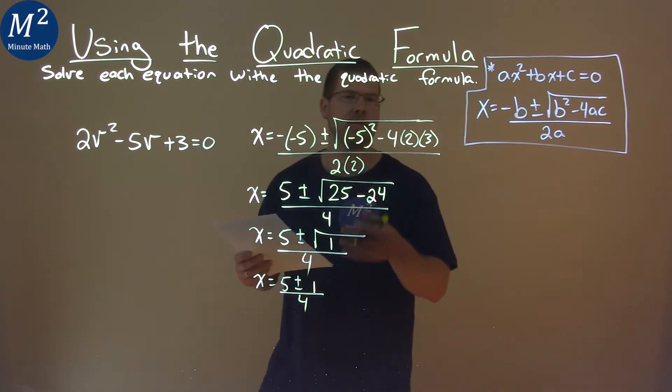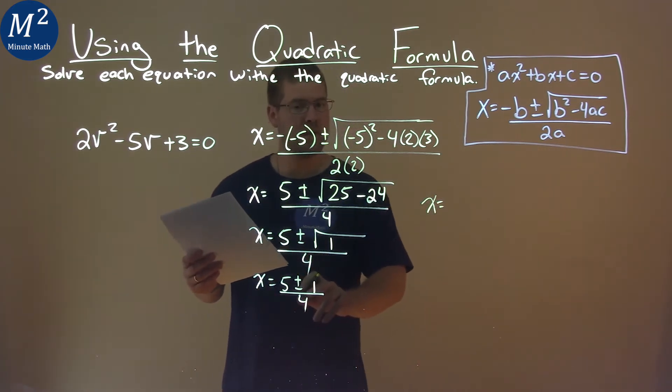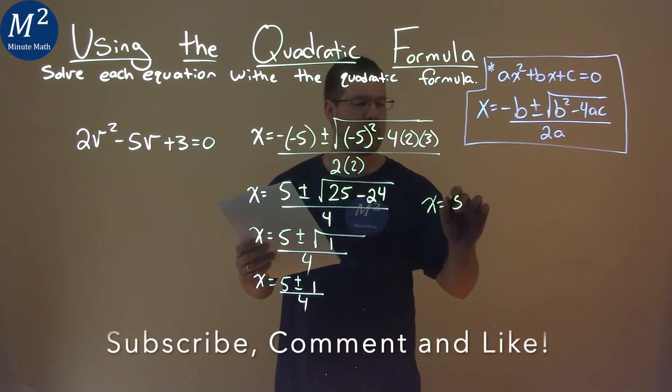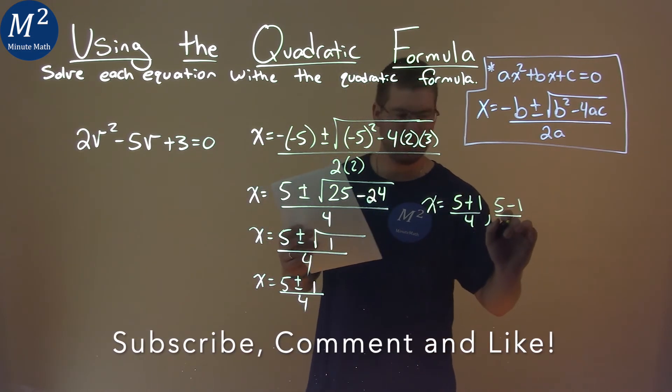And at this point, I like to break this down into two parts. We have x equals the plus and then the minus, right? So x equals 5 plus 1 over 4, and 5 minus 1 over 4.